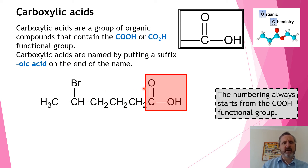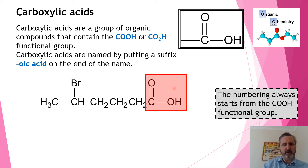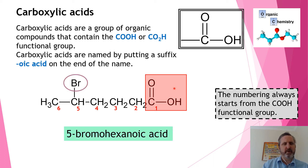We always start numbering from the functional group end for carboxylic acids and aldehydes. This molecule is called 5-bromohexanoic acid. Remember, always start numbering from this end, and we never have to state what number the hexanoic acid is because it's always number one.